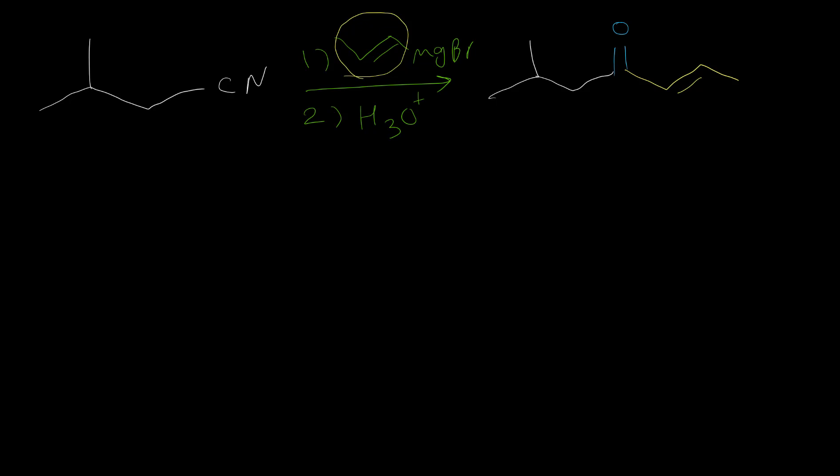The good thing about Grignard is we can have primary, secondary, tertiary alkyl. We can have vinylic like this example. We can have cyclic and we can have aromatic. So that's why this method is very useful and important in chemistry.